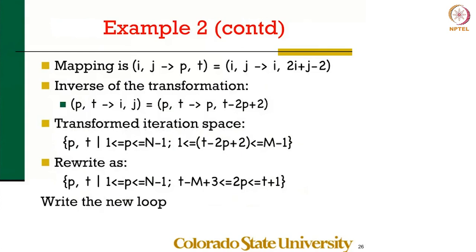I, j goes to p, t, where p is i, and time step is 2i plus j minus 2.